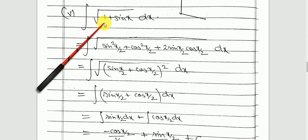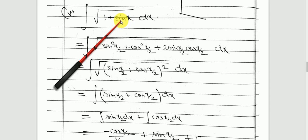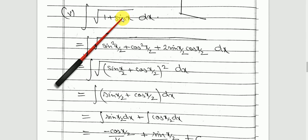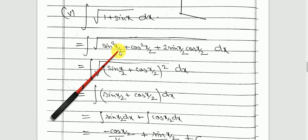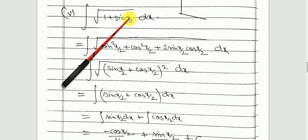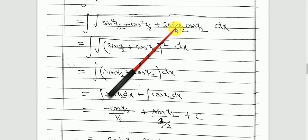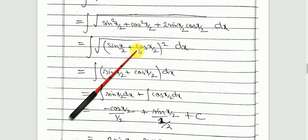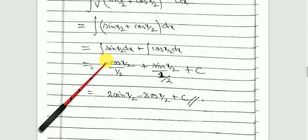Next, integration of square root of 1 plus sin x. Here sin x can be written as sin(2 × x/2), and 1 can be written as sin squared(x/2) plus cos squared(x/2). So sin(2 × x/2) becomes 2 sin(x/2) cos(x/2). This whole expression is of the form a² + 2ab + b², which equals (sin(x/2) + cos(x/2)) squared. Taking the square root removes the square, leaving sin(x/2) plus cos(x/2). Write them separately, integrate each term, and you will get the answer.